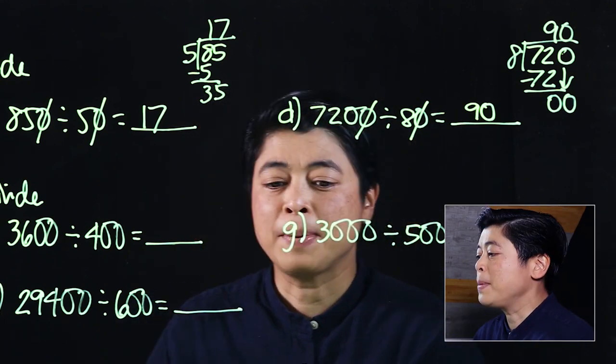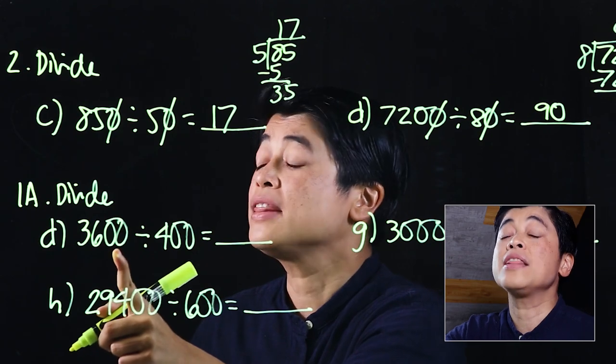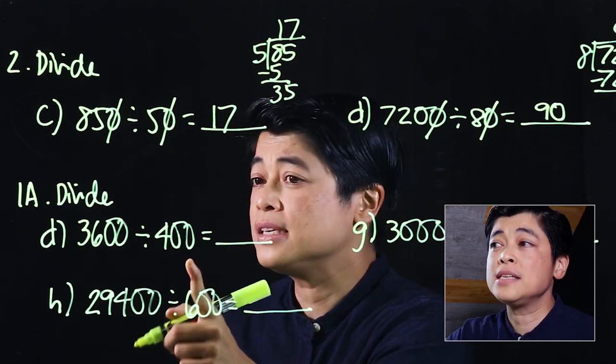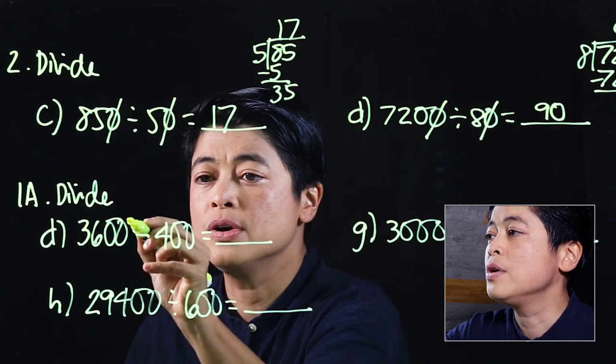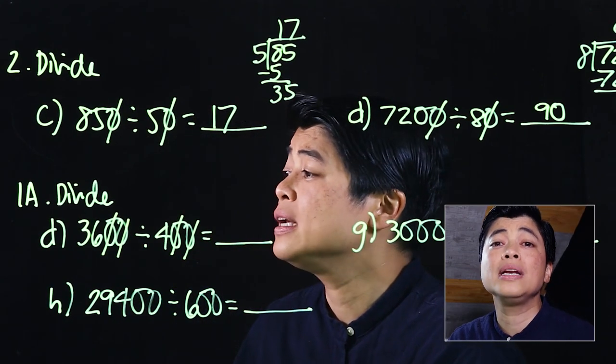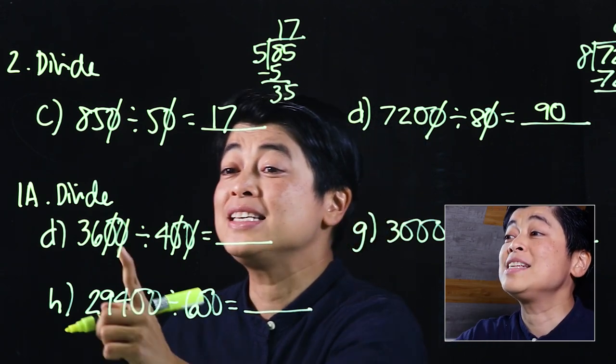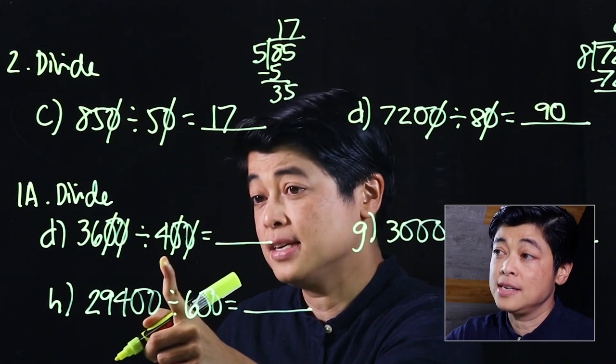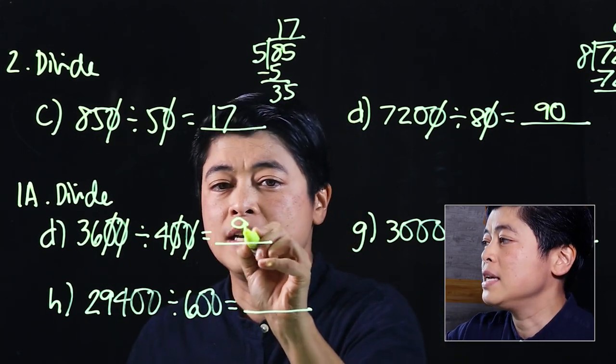In the next page, page 34, we have 3600 divided by 400, which means the zeros here I have two, and here I have two. Those zeros will cancel. We can only cancel equal amounts of zeros. This I should be able to do mentally, and so will the kids. This is 36 divided by 4, which is 9.